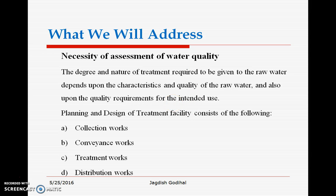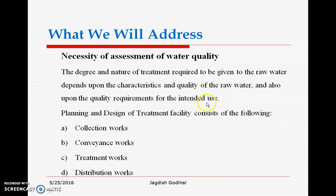To meet these aspects we have to provide the treatment facility consisting of collection works, conveyance works, treatment works and distribution works. The necessity of assessment of water quality depends upon the degree and nature of treatment required to be given to the raw water, which depends upon the characteristics and quality of the raw water and also upon the quality requirement for the intended use — here the intended use is domestic purpose.